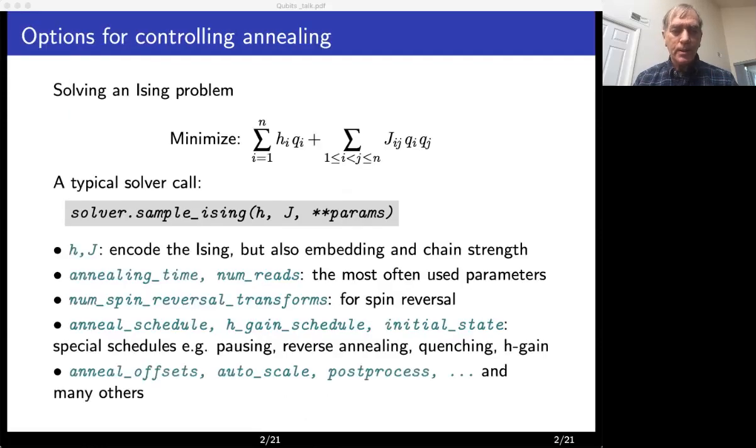So what kind of annealing options do you have in mind? Let us start by reminding that D-Wave is designed to solve an Ising problem with coefficients h and j. A typical call to D-Wave would include parameters h and j, the coefficients of the Ising problem, and a few other parameters. The most commonly used other parameters are the annealing time and the number of reads. Other parameters, a couple of dozens of them, are less often used and for many of them there is limited information and guidance on how to make the best use of them. In this talk, I want to discuss our experience with using some of these parameters.